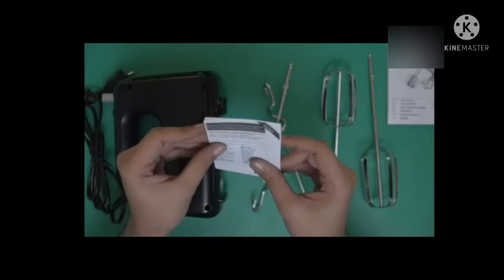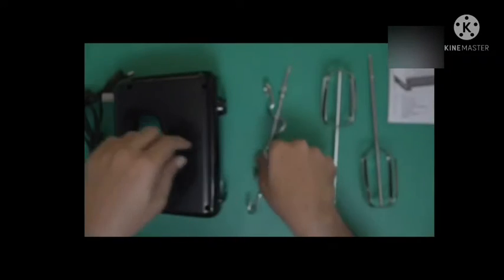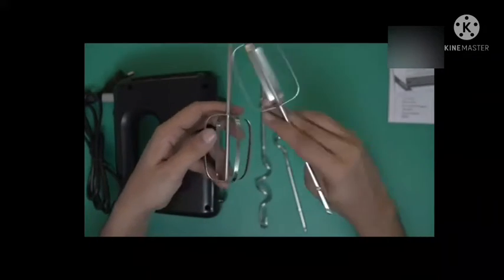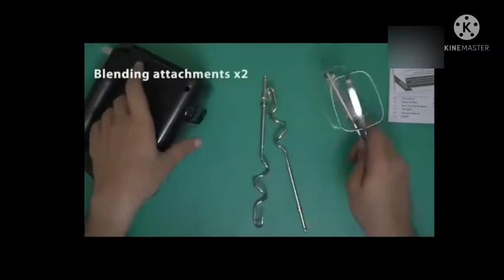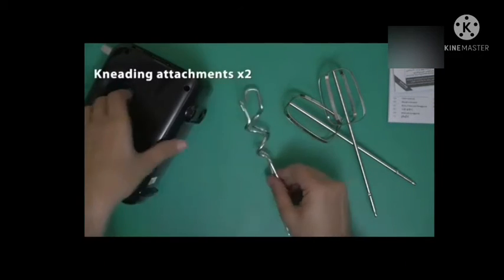Next up we have a certificate of purchase, basically a warranty card. We have a lot of these attachments for the mixer. There are 2 of these, a couple of attachments. These are basically your beaters and these are an alternate pair of beaters.